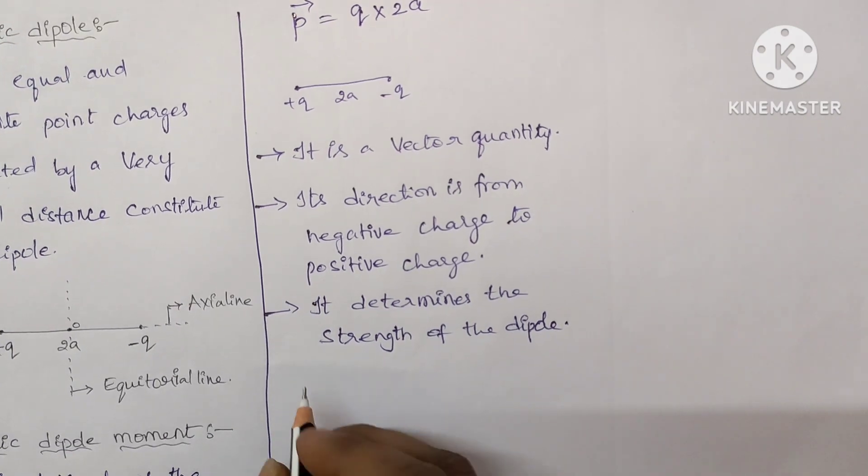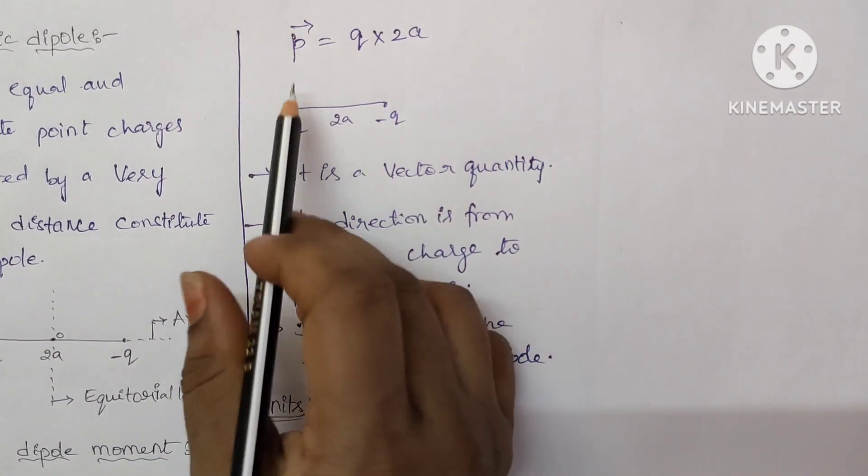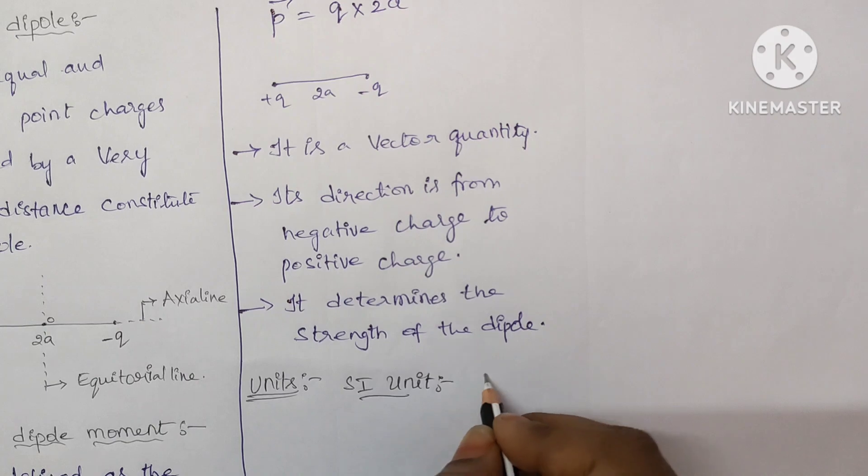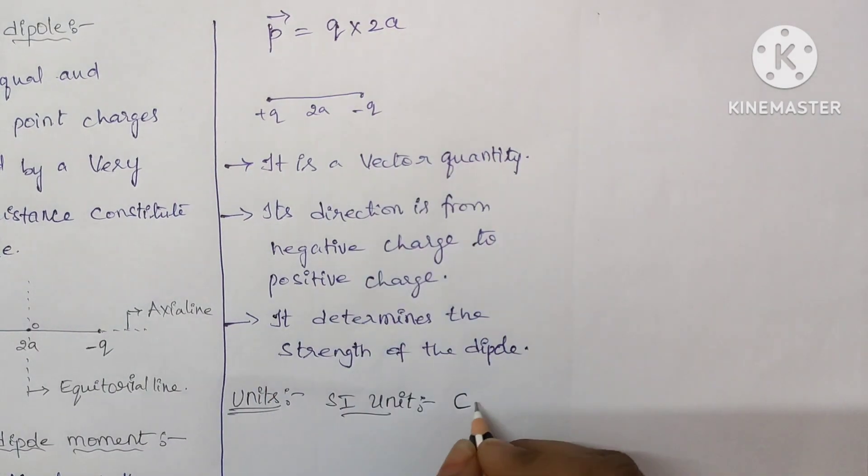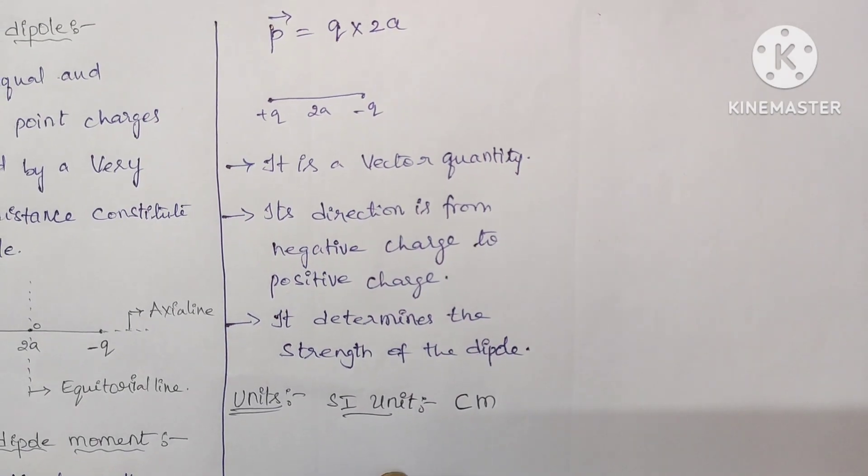Let us see the unit of the electric dipole. Its SI unit is, see here P is equal to Q into 2A. Here Q is charge so coulomb and 2A is the length of the dipole so meter. Coulomb meter is the SI unit of electric dipole moment.